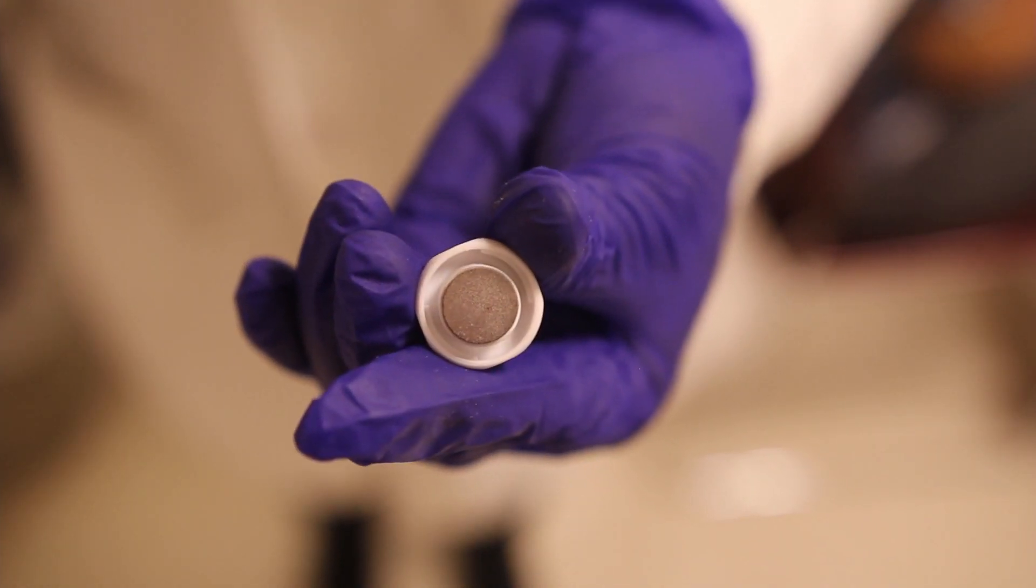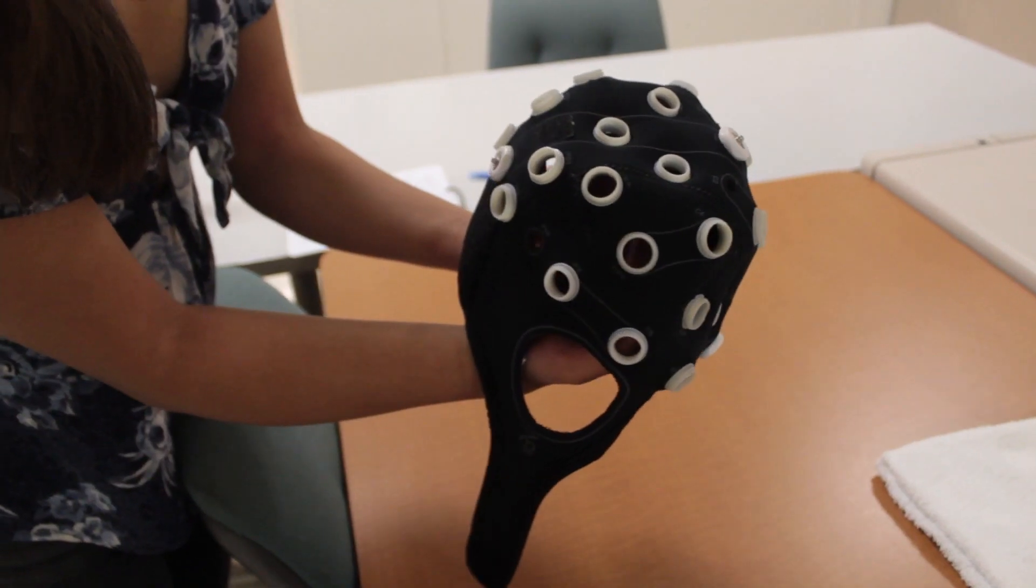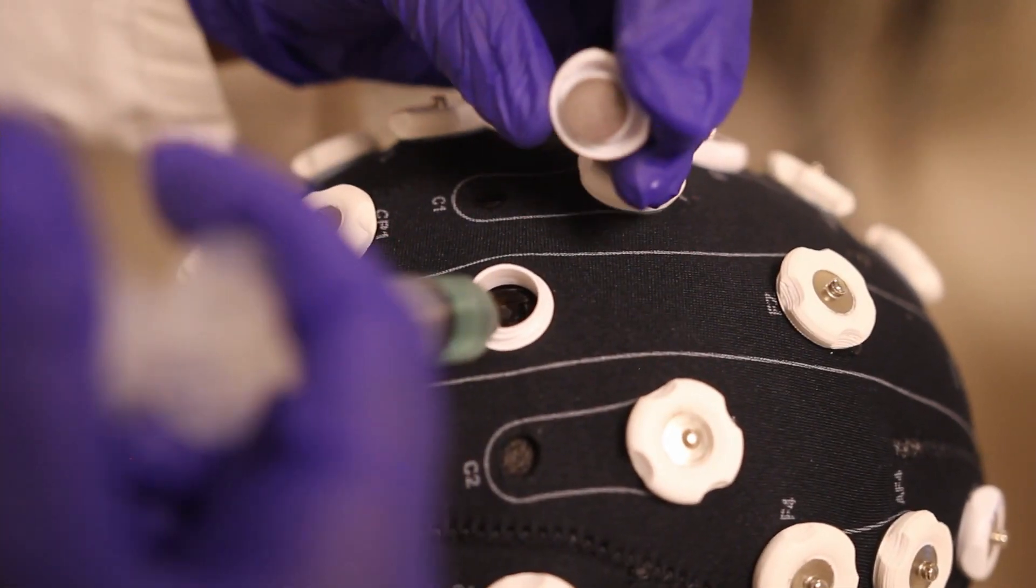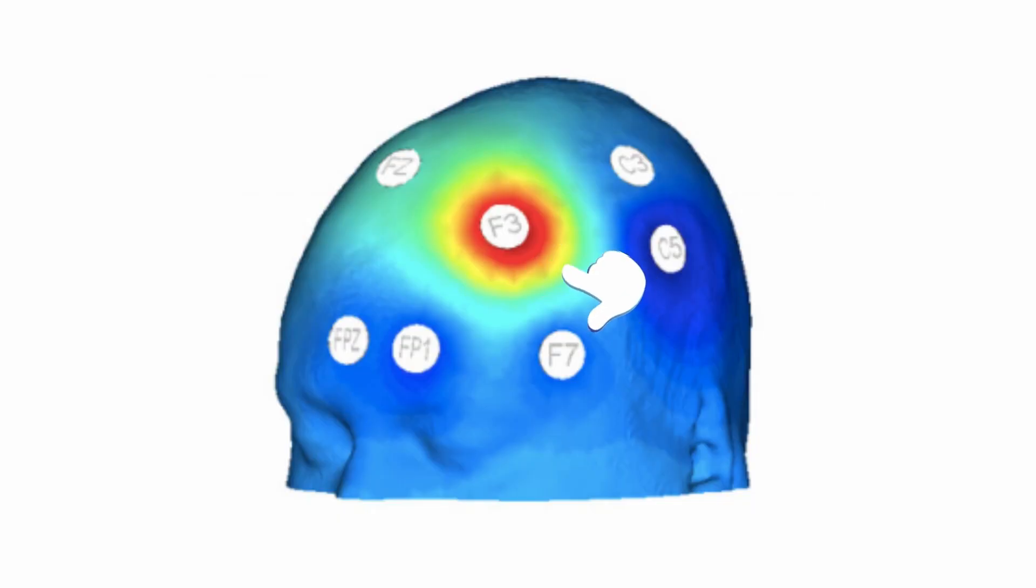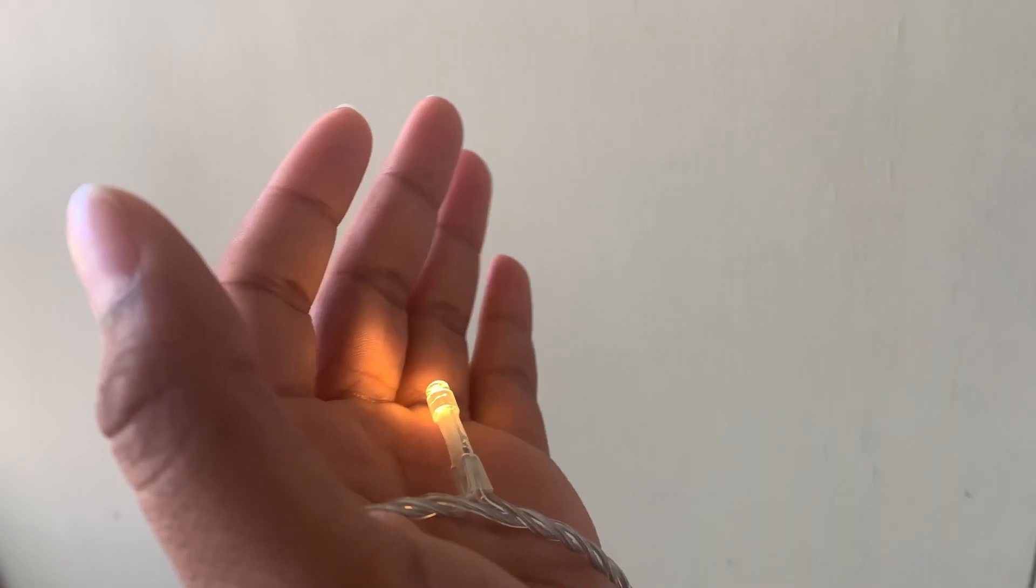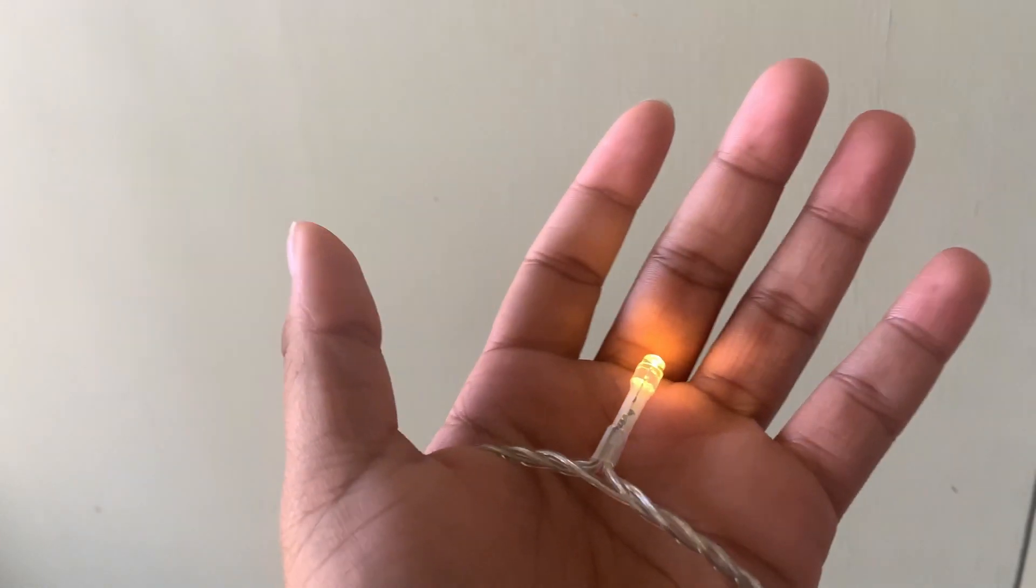TDCS is a noninvasive brain stimulation technique that uses the same cap to apply a very small amount of electrical current to specific parts of the brain. The electrical current is about the same amount used in a small LED light.